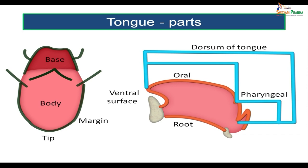Now let us see the parts of the tongue. The dorsal surface of the tongue is divided into two parts — the front part in the oral cavity is the oral part, and the part going towards the pharynx at the back is the pharyngeal part. The part extending from the mandible to the hyoid bone is called the root of the tongue. The part extending from the tip to the mandible comprises the ventral surface of the tongue.